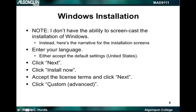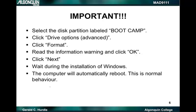This next step is important: we need to format the partition where Windows is going to reside. To do that, click Custom Advanced. This is vitally important — the screen will show you all of the partitions currently known on the hard disk. You'll make sure to select the one labeled Boot Camp, then click the Drive Options Advanced link, make sure the Boot Camp partition is selected, and click Format. Please note: if you select another partition and click Format, you've overridden OS X and the chances are very good that you've done irreversible damage to the operating system installation.